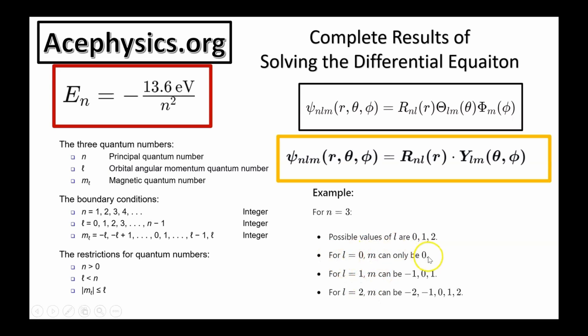When l is equal to zero, ml must be zero. When l is equal to one, ml equals negative one, zero, and plus one, and when l is equal to two, ml can take on values negative two, negative one, zero, one, and two. All of these wave functions have the same energy because they all have the same principal quantum number, n equals three.